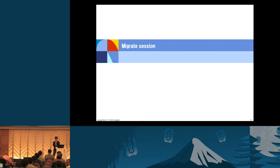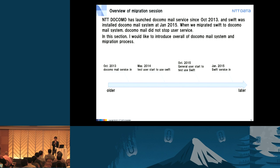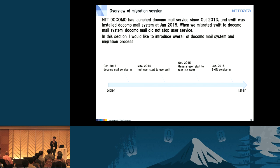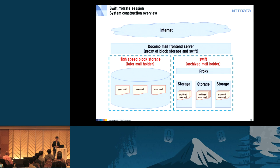Let's start the Migration session. NTT Docomo launched Docomo Mail service since October 2013, and Swift was installed to the Docomo Mail system in January 2015. When we migrated Swift to the Docomo Mail system, Docomo Mail did not stop user service. I'd like to introduce the overall Docomo Mail system and migration process. Note that there are many highly confidential aspects, so this is somewhat abstracted.